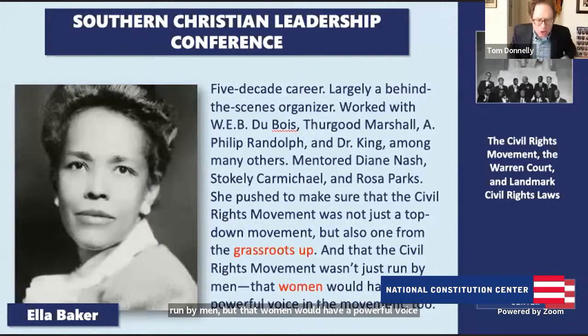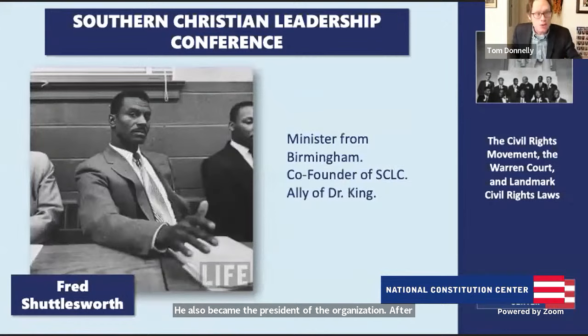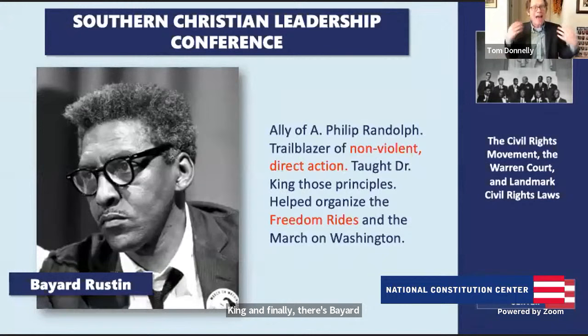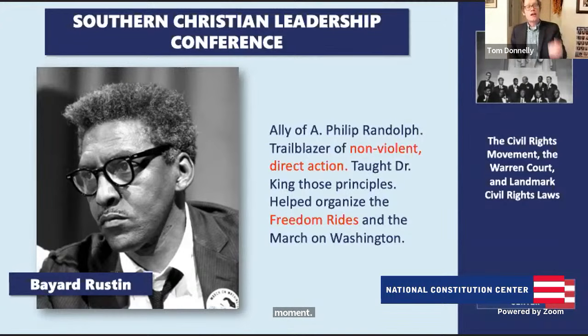Other key figures in the SCLC include Ralph Abernathy, a Baptist minister and close friend of Dr. King, who worked with him on the Montgomery bus boycott and became president of the organization after King's tragic assassination. There's Fred Shuttlesworth, a minister from Birmingham and co-founder of the organization. And finally, Bayard Rustin — a trailblazer of nonviolent direct action who taught those principles to Dr. King. Practically, he was also a great organizer who organized the Freedom Rides and the logistics around the March on Washington.